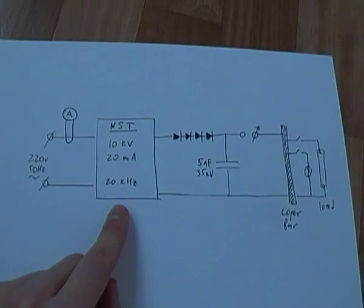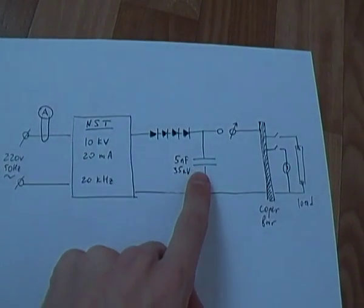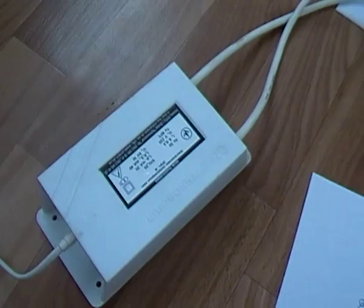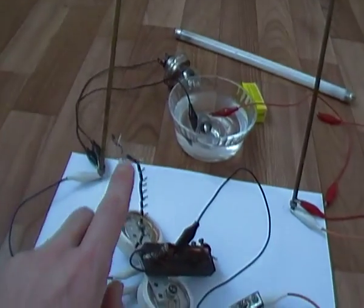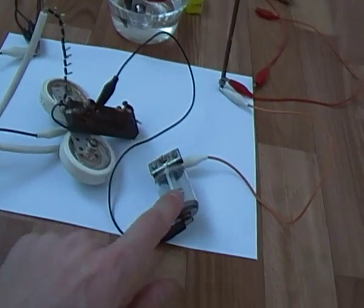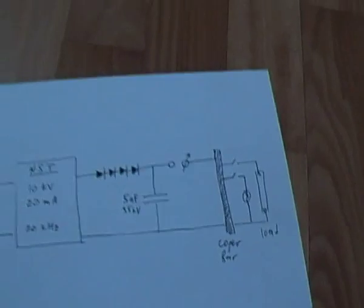So we have a neon sign transformer feeding the capacitors through the bank of diodes. Here's my transformer and current measuring device noted here, and bank of diodes and two capacitors in parallel and the spark gap. Now I'm using a gas-filled spark gap.